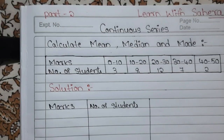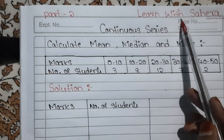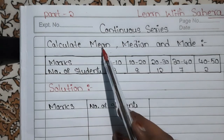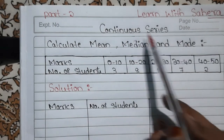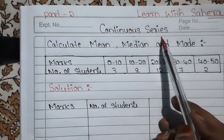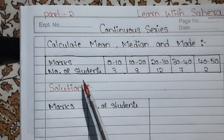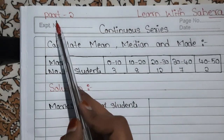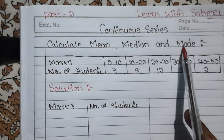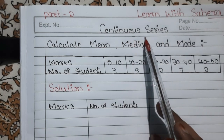Hello everyone, welcome back to the channel 'Learn with Sahira'. In this video we are going to see the calculation of mean, median, and mode in continuous series. Continuous series is also known as grouped data. In our previous video, Part 1, we have seen the calculation of mean, median, and mode in discrete series, also known as ungrouped data.